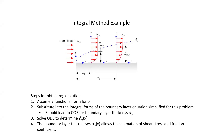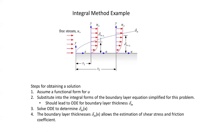Last time we started talking about this integral method. What we're doing in the integral method is we're assuming a functional form — we're assuming that the velocity profile is described by an equation we give it. Then we impose conditions to make sure that certain things about that velocity profile match reality.